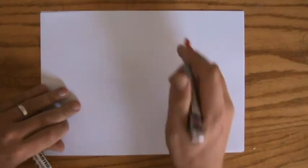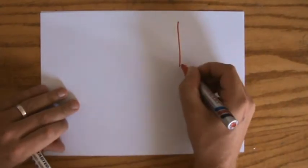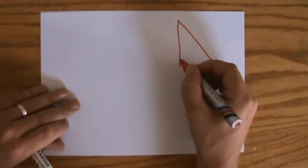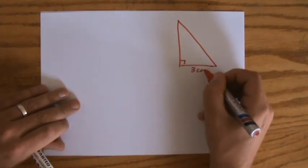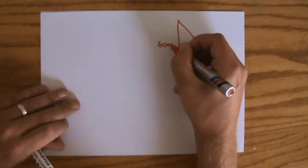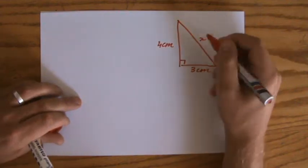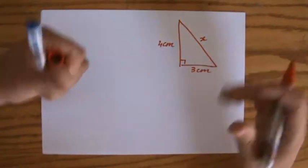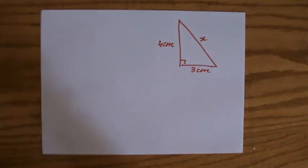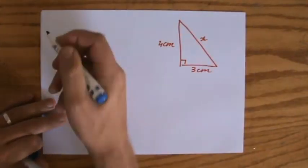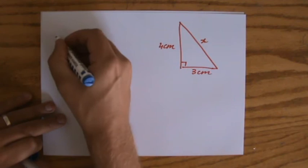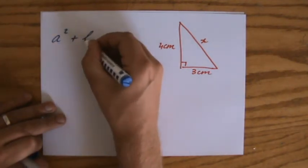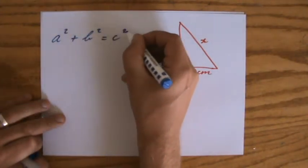All right, so I'm going to show you an example question now, where I have a right-angled triangle. This is the same example as we just did, 3 centimeters and 4 centimeters. And they're asking me, what is the length of X? Right-angled triangle, calculating the length. So, we use Pythagoras. And we write down A squared plus B squared equals C squared, the hypotenuse squared.